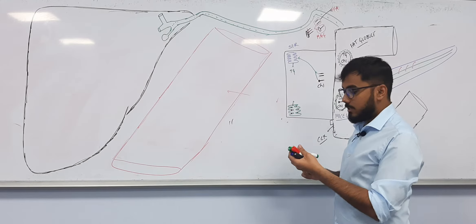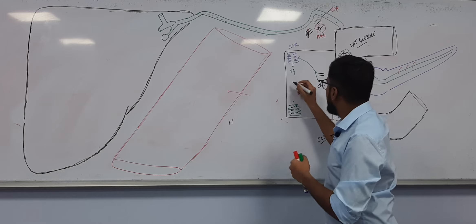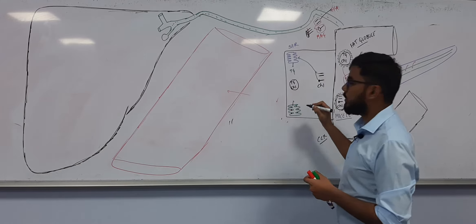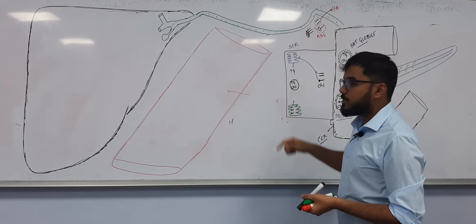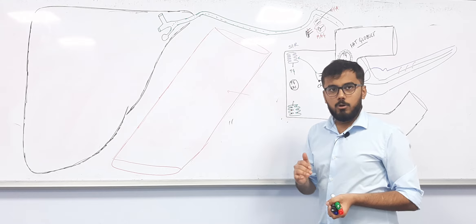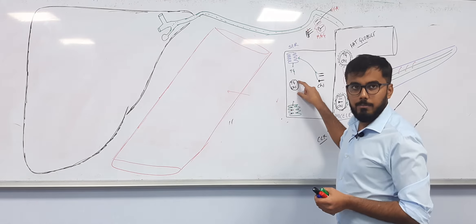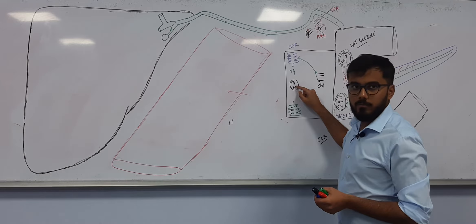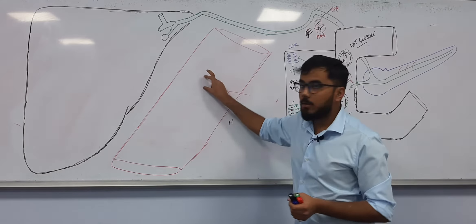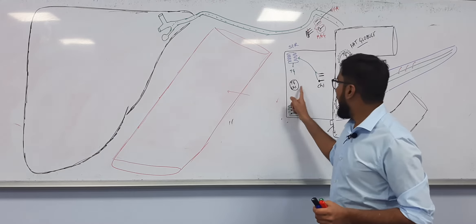Triglyceride is synthesized in the smooth ER. The cholesterol is also there. Now it is time to send triglyceride and cholesterol into the blood vascular system, but they are non-polar and blood is polar. So we have to surround them with a protein. That is why from the rough ER a specific protein is synthesized.